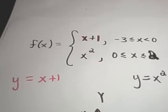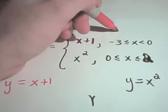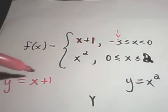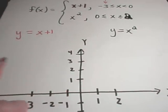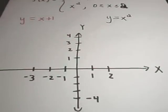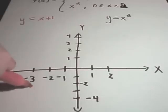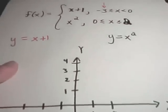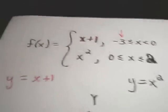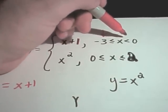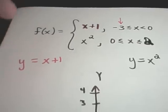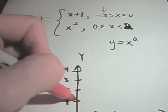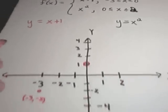To plot the first piece, I look at the interval. At x equals negative 3, plugging into x plus 1 gives negative 3 plus 1, which is negative 2. So the point negative 3 comma negative 2 is on the graph. Even though x equals 0 isn't used, plug it in as a reference: you get y equals 1. Since it's strictly less than, you make an open circle at 0 comma 1 instead of a solid point.